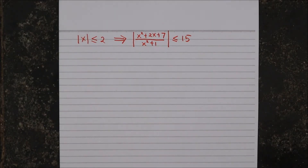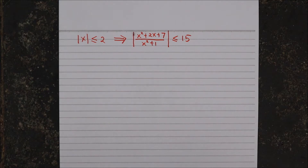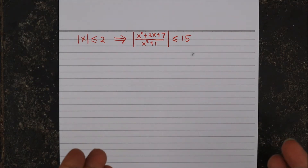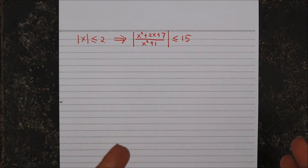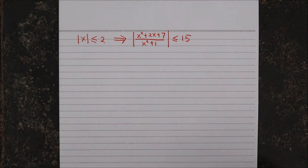Hello, welcome back again to the channel. On this video we are going to discuss this inequality. We are supposed to show that if the absolute value of x is less than or equal to 2, then the absolute value of that expression is less than 15.